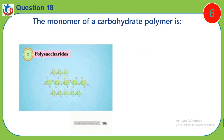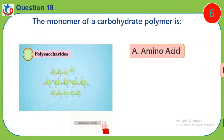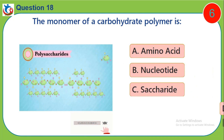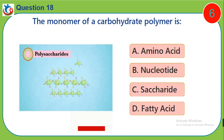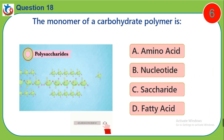Question 18. The monomer of a carbohydrate polymer is: A. Amino acid, B. Nucleotide, C. Saccharide, D. Fatty acid.